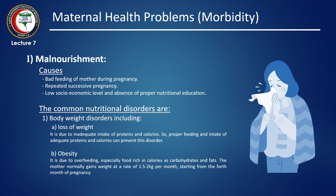The common nutritional disorders include body weight disorders: loss of weight and obesity. Loss of weight is due to inadequate intake of proteins and calories, so proper feeding and adequate intake of proteins and calories can prevent this disorder. Obesity is due to overfeeding, especially foods rich in calories such as carbohydrates and fats.